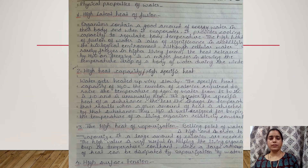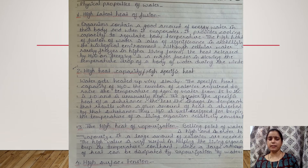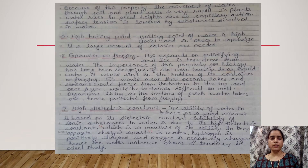The third physical property is the high heat of vaporization. The boiling point of water is very high, and in order to vaporize it, a large amount of calories is required. This high value is very useful in helping living organisms to keep their temperature constant, since a large amount of heat can be dissipated by vaporization of water.